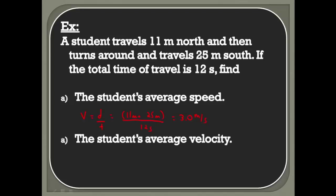For part b, the student's average velocity, we get into something different because velocity equals displacement over time. To find displacement, we use a vector diagram. We have our origin point, traveled 11 meters north, then turned around and traveled 25 meters south. We're looking for the resultant vector. We traveled more south than north, so that's 14 meters pointing south.